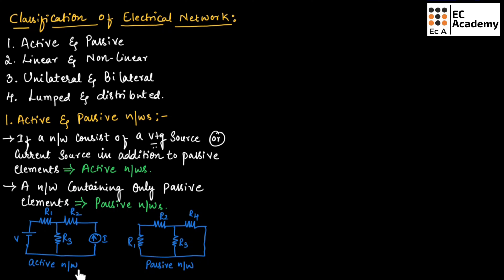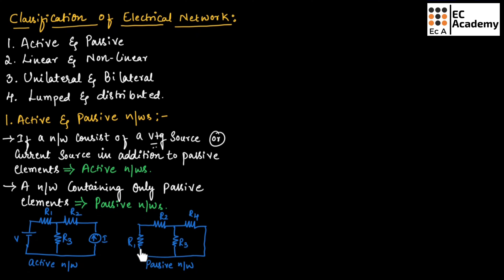Here you need to remember that voltage sources and current sources are active sources. This figure shows a passive network where it consists of only passive elements — there are no active elements present here.